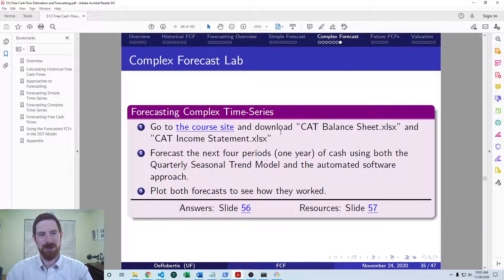And you want to use those to forecast the next four periods, which will be one year worth of data of the cash. And you want to do that with both the quarterly seasonal trend model as well as the automated software approach.